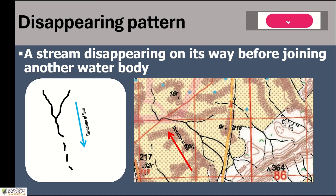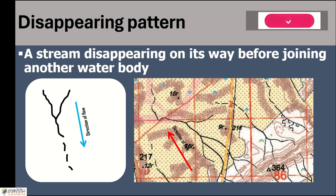When we draw this, we initially draw a normal line. Then it dashes to show the disappearing nature of the stream. And finally, they end before joining another water body.